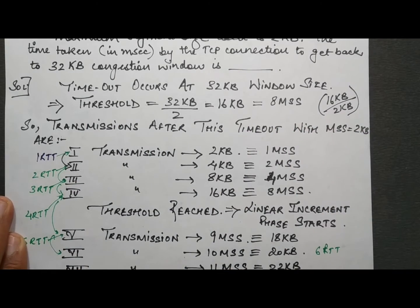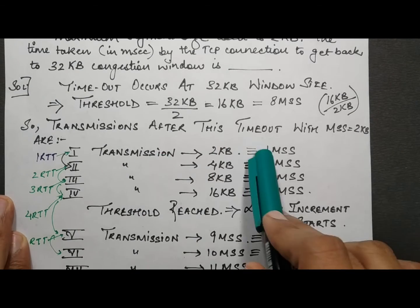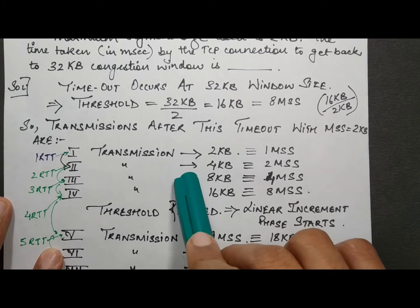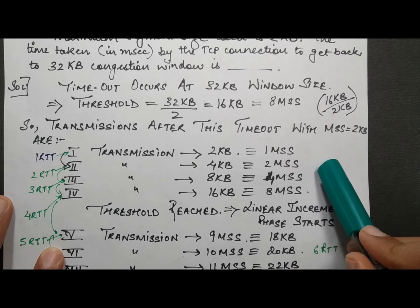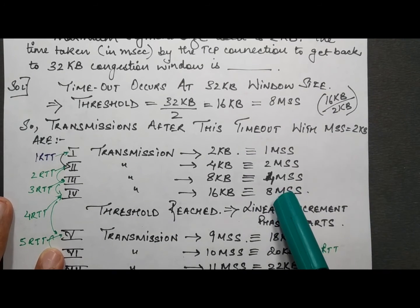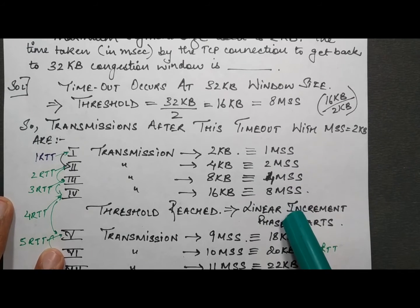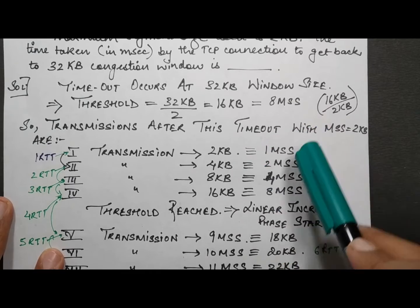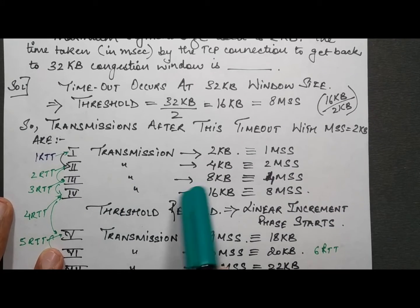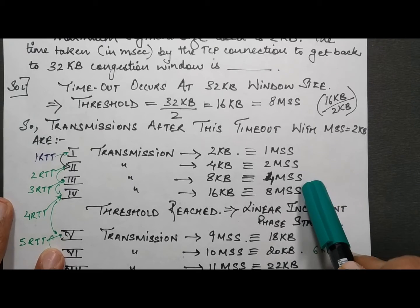The first transmission after the timeout is 1 MSS (2 KB). Then we begin the multiplicative increment process — slow start — doubling the window each round: 1 MSS, then 2 MSS, then 4 MSS, then 8 MSS.